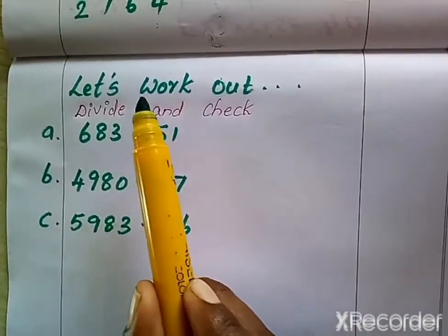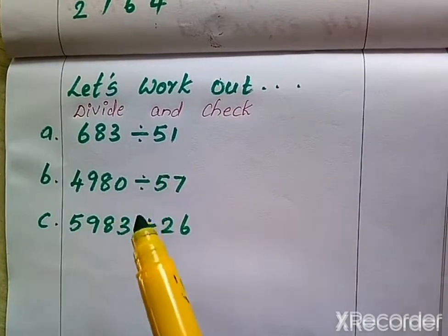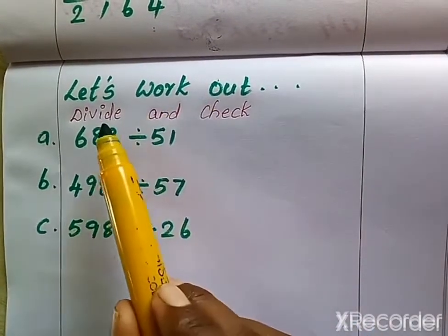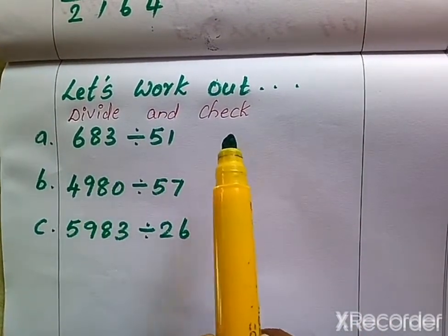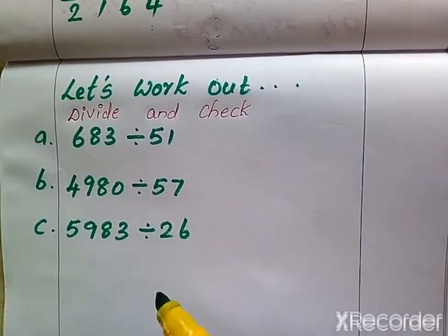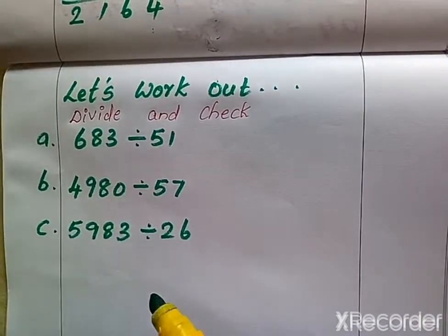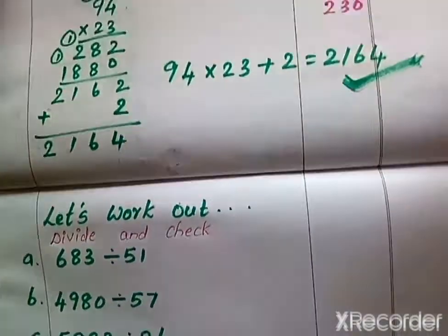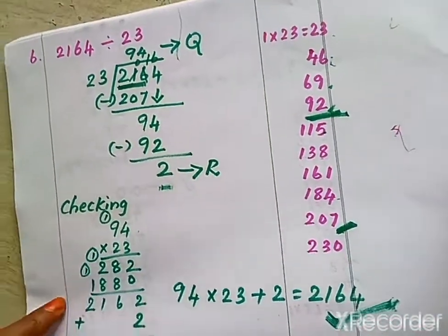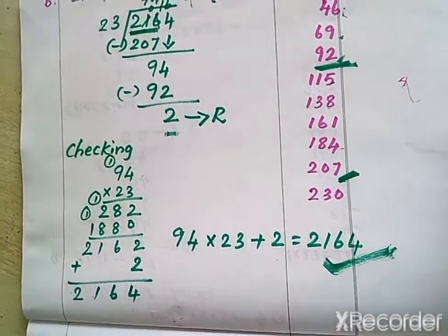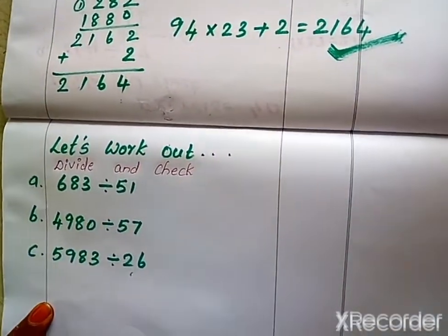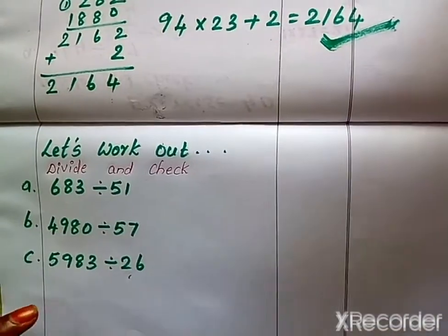Next, here are a few sums for your homework. You have to divide and check your answer. Complete this in your classwork, copy the B sums as well, and then do your homework sums. Thank you, children.